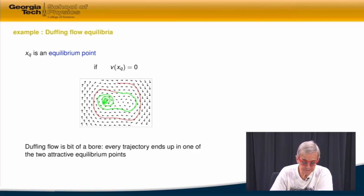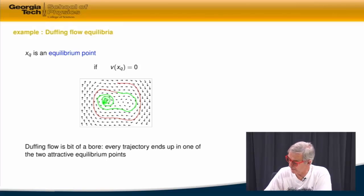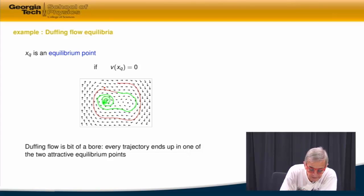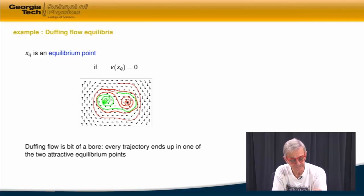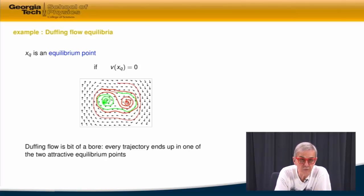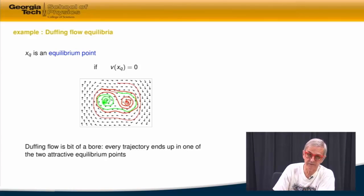It's pretty boring — except it turns out that when you think about it, even that flow is not so boring. Because if I start slightly off this trajectory someplace else, I might find out that I turn this way and then start spiraling and fall into this hole. So even having just two attractive equilibrium fixed points produces somewhat interesting dynamics.